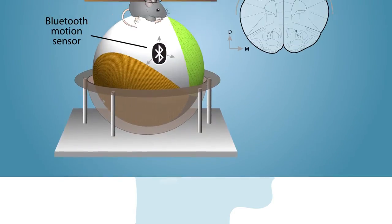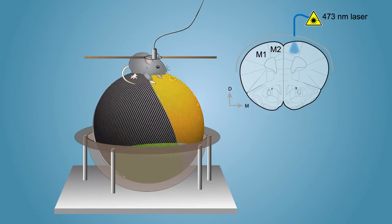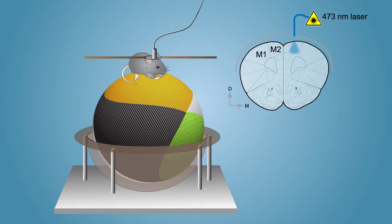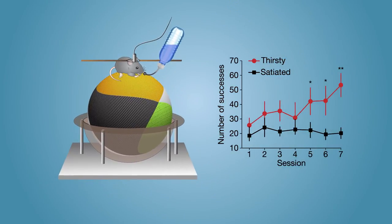The scientists expressed the dopamine sensor in the brains of mice trained to walk on a ball with various textures. When the mice stopped on a specific texture, they got a drink of water. Thirsty mice were motivated to find the water-associated texture to receive their refreshing reward.